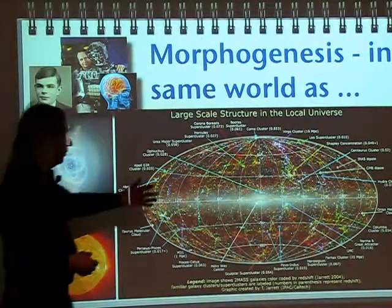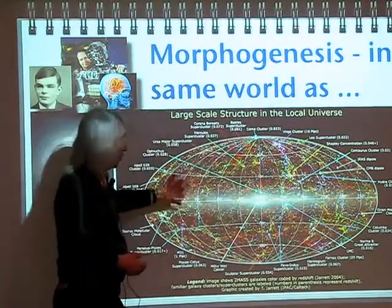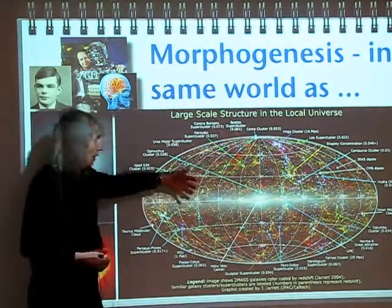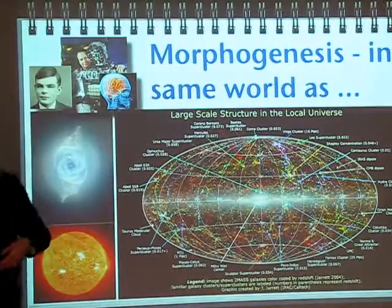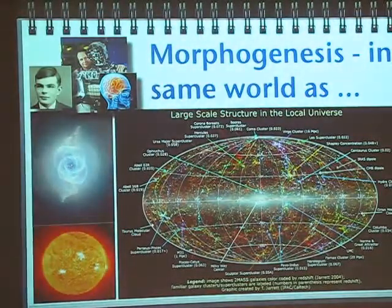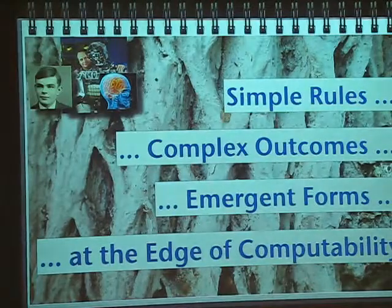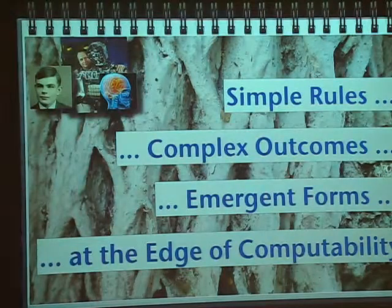Here you've got the universe. You've got a lot of well-understood physical causality, but you've got large-scale patterning in the universe which is hard to explain — except maybe in terms of these emergent patterns. So you've got simple rules, complex outcomes, emergent forms at the edge of computability.